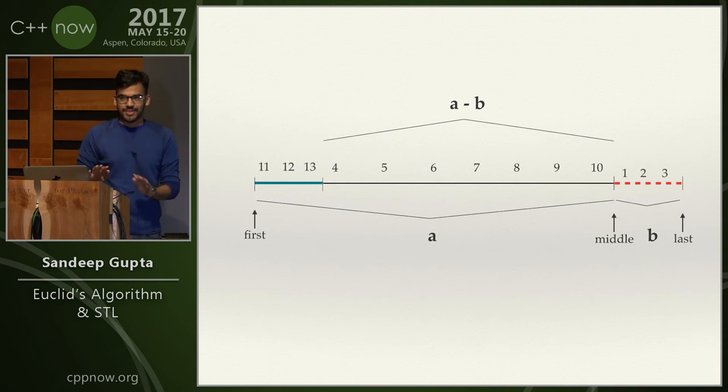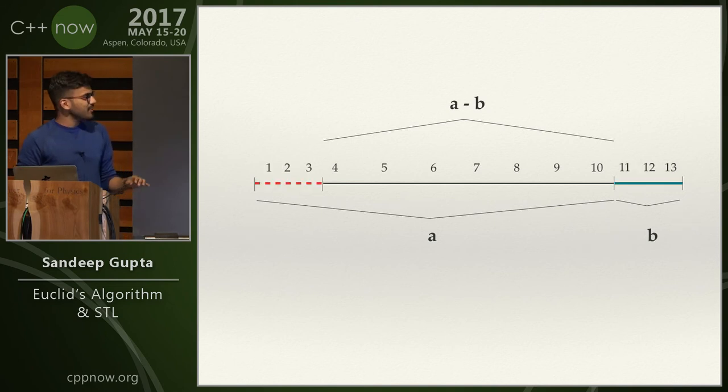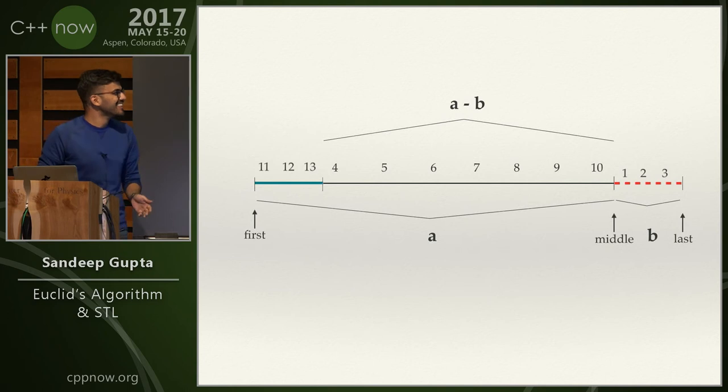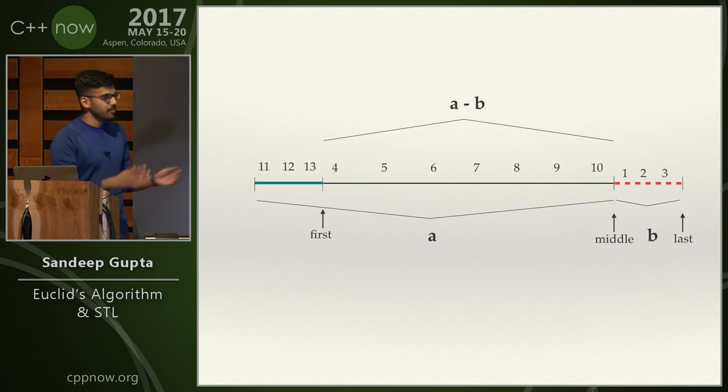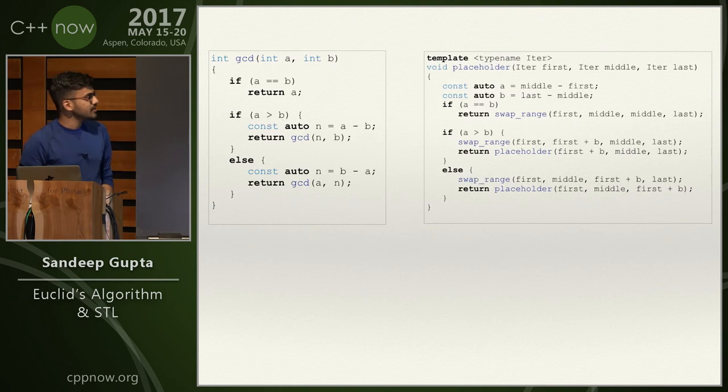It took me surprisingly long time to do this. If any one of you was at John Lakos's talk, I don't know how he did that. So yeah, so we swap them, and we move our iterator forward, and we're going to apply the algorithm to the new iterators that we have. That's it.